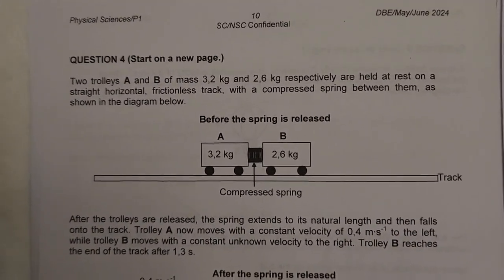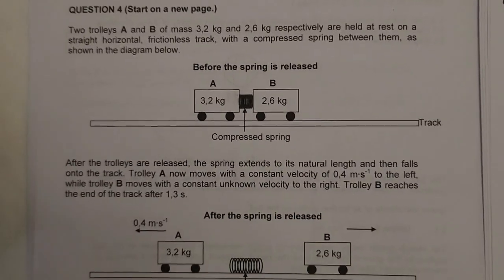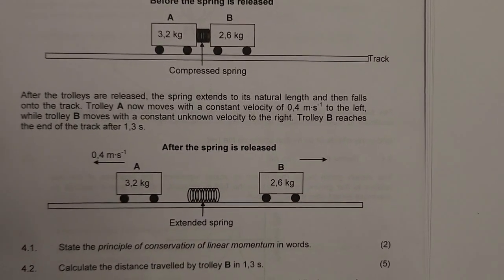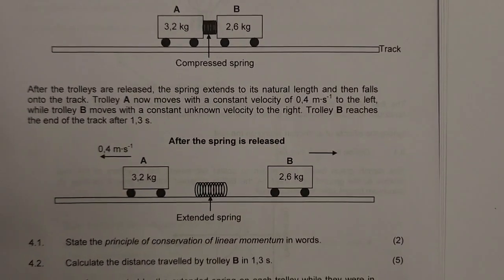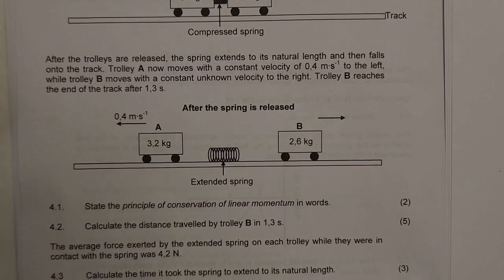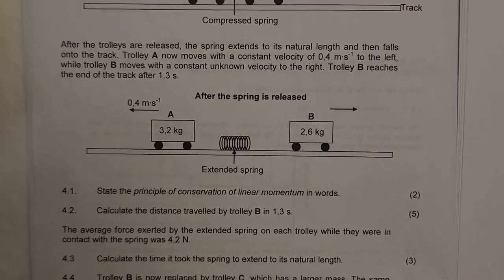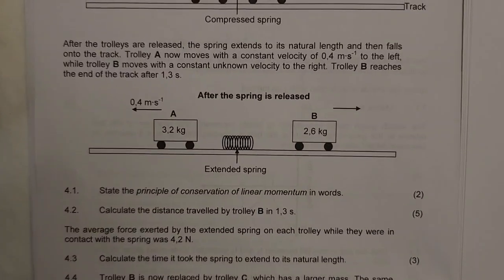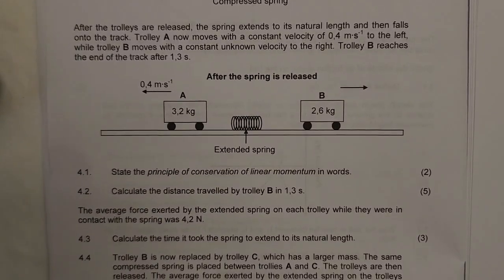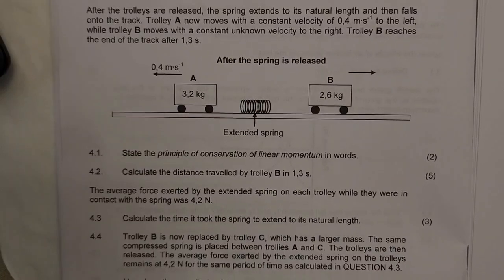Welcome back, we are now in question number four of the National Senior Certificate May/June 2024. We are given two trolleys A and B of mass 3.2 kg and 2.6 kg respectively, held at rest on a straight horizontal frictionless track with a compressed spring between them. After the trolleys are released, the spring extends to its natural length and falls onto the track. Trolley A moves with a constant velocity of 0.4 m/s, meaning momentum before is zero. Trolley B moves with an unknown constant velocity to the right, and trolley B reaches the end of the track after 1.3 seconds.